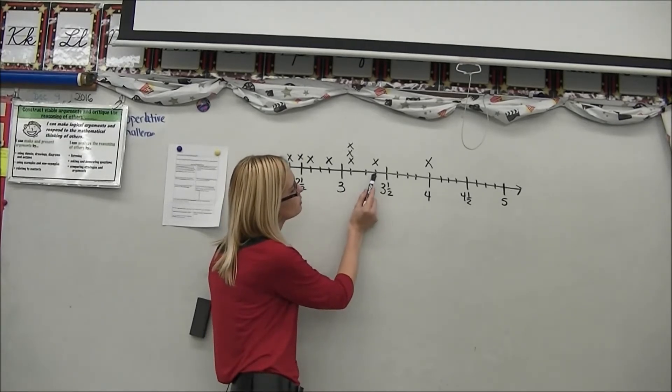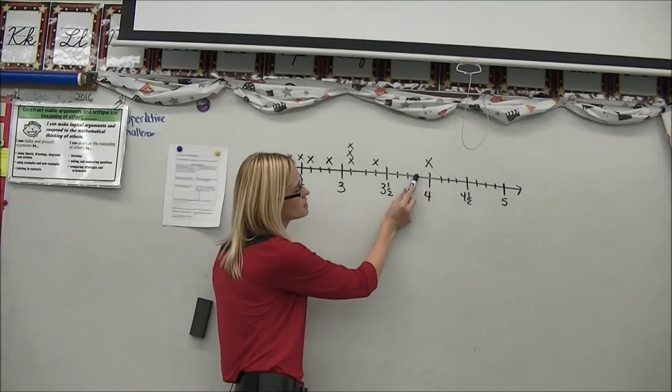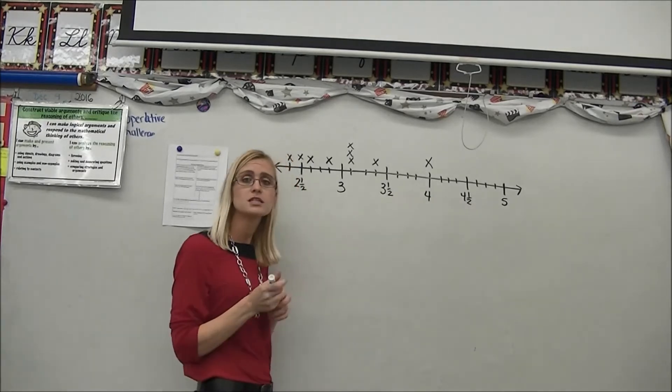I have 1, 2, 3, 4, 5, 6, 7, 8. So this number line is divided into eighths.